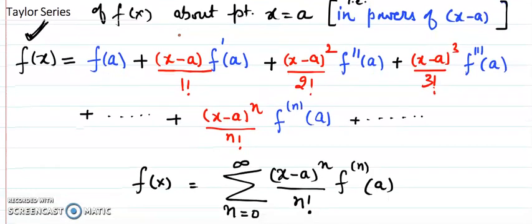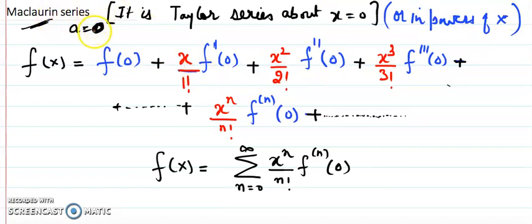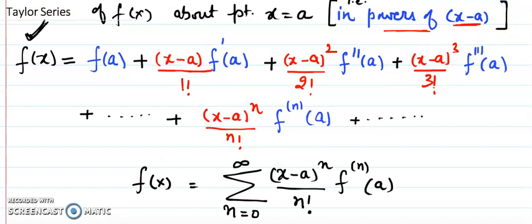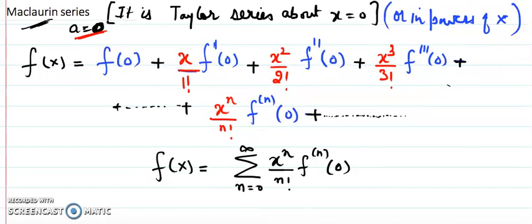There is a special case of the Taylor series: when a equals 0, we get a series known as the Maclaurin series. When you plug a equals 0 into the formula, f(0) gives a constant term, x minus 0 is just x, x minus 0 squared is x squared, and so on. So all the powers are powers of x, and this is also known as a power series in x.